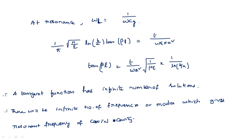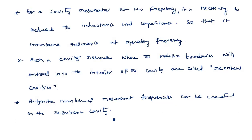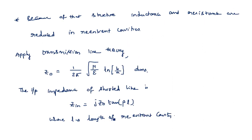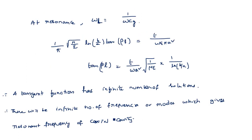This is what re-entrant cavities are and how to calculate the value of tan(βl). We have seen the shape of the re-entrant cavity — several shapes are available. For this cavity, the resistance, capacitance, and inductance can be reduced by having a different shape, which gives an infinite number of resonant frequencies. Using transmission line theory, we calculated the characteristic impedance Z₀, substituted it into the input impedance, and finally obtained the equation for tan(βl).